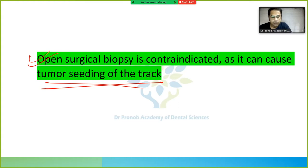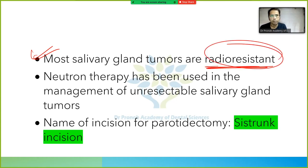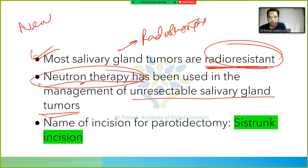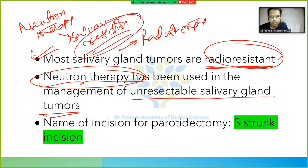Open surgical biopsy is contraindicated as it can cause tumor seeding of the tract. Most salivary gland tumors are radio-resistant, meaning radiotherapy does not work on them. Neutron therapy has been used in the management of unresectable salivary gland tumors.